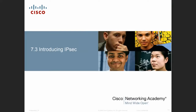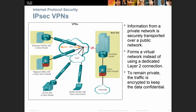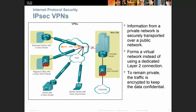We will do a LAN-to-LAN VPN using LAN IPsec. Information from a private network is securely transported over a public network or the internet. It forms a virtual network instead of using a dedicated Layer 2 connection — you don't need to pay for a PPP subscription. You just use the internet, but install a good VPN. Traffic is encrypted to keep the data confidential.